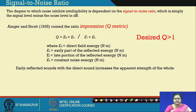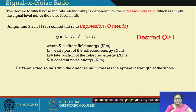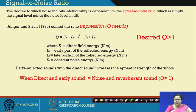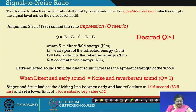These background noises all account towards the denominator. If Q is more than 1, we have more positive energy on the signal side. If the denominator is high, Q becomes less than 1, which is highly undesirable. The early reflected sound with the direct sound increases the apparent strength of the source, which is a positive component added to the direct sound field. When the direct sound and the early reflected sound equal the noise and reverberant sound, Q equals 1. Enger and Strutt also set the dividing line for the late portion of reflected energy.